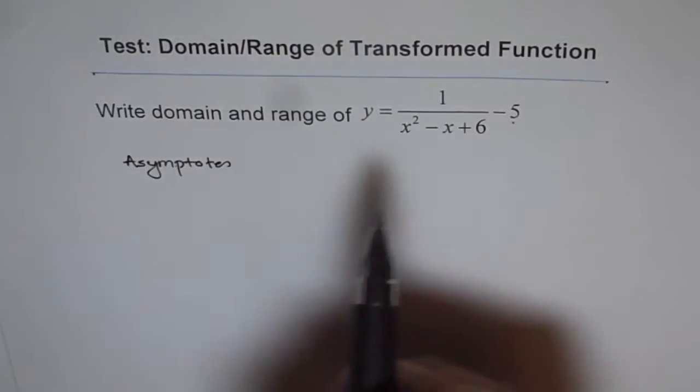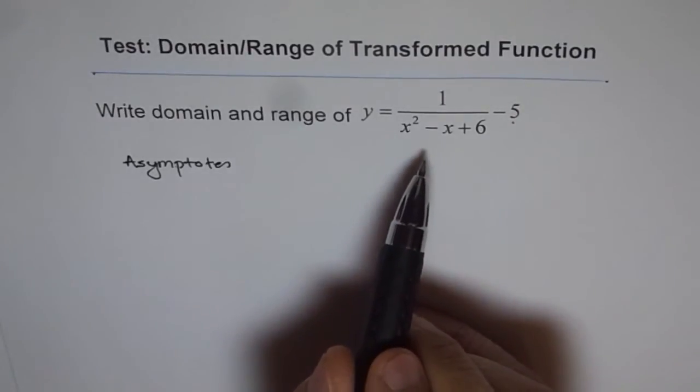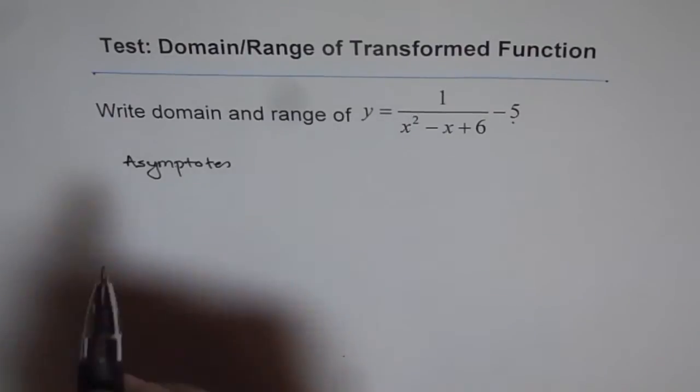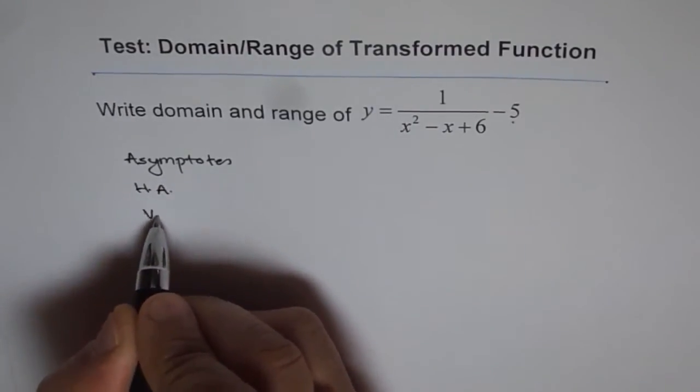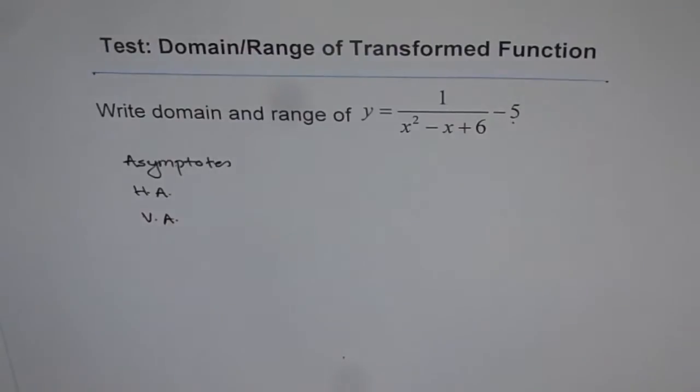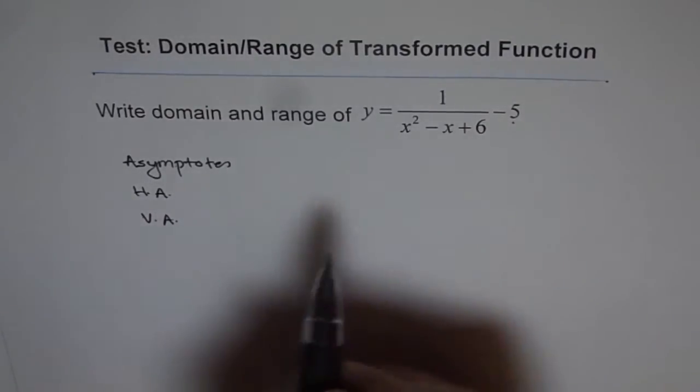So asymptotes actually give restriction to your function here when it is a rational function. So write down the equation for horizontal asymptote and for vertical asymptote. That is kind of important.